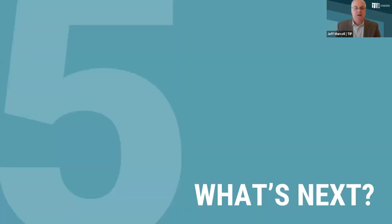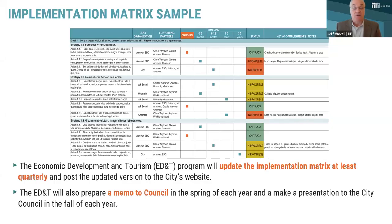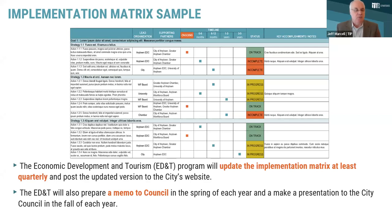In terms of what's next: the draft plan is posted on the city's website. We will be receiving comments on the city's website using Open City Hall until June 26th. At that point, the city will review all comments, make adjustments to the document, and then the final presentation will be made to City Council on July 18th. Once the plan is ultimately adopted, the city will start using an implementation matrix to carry out the plan.